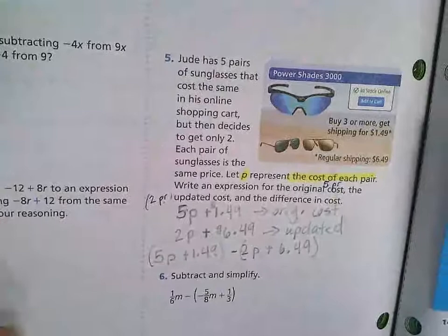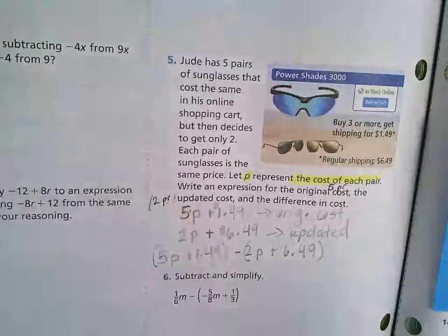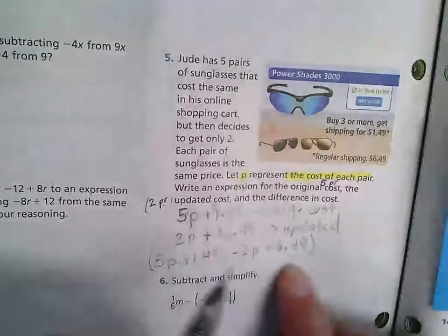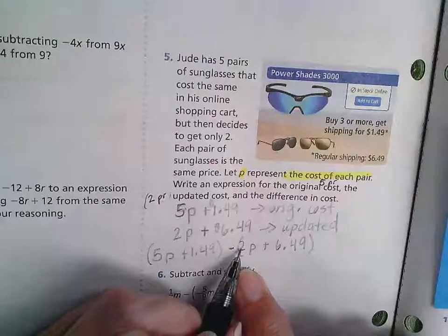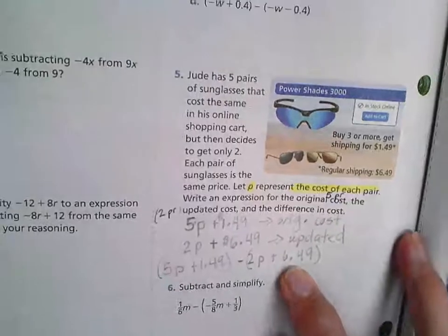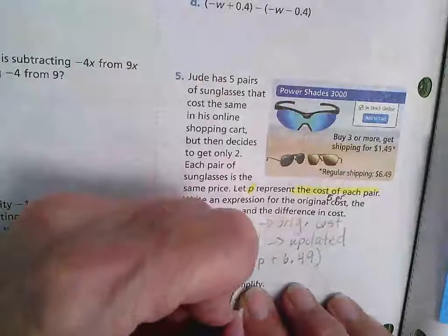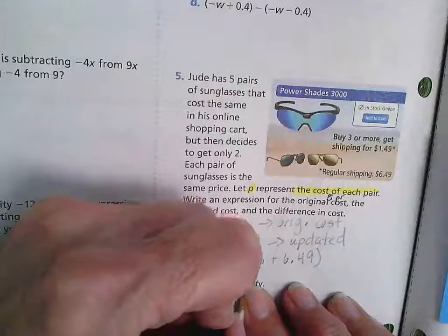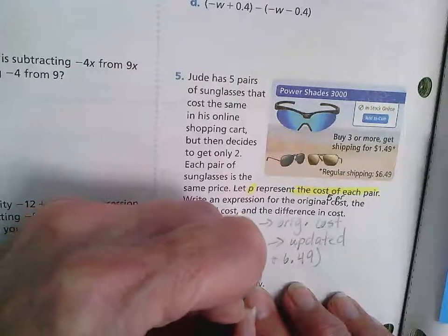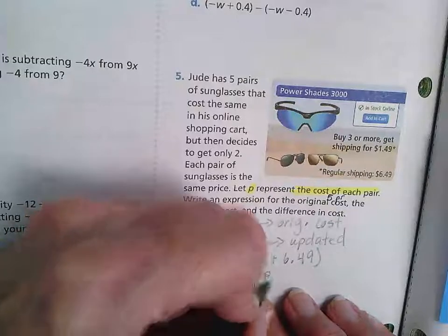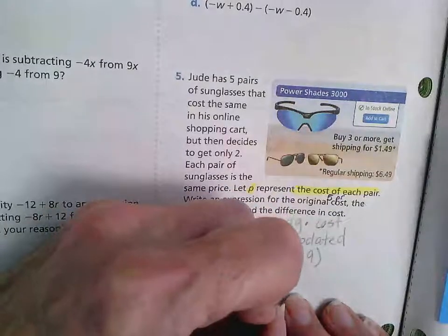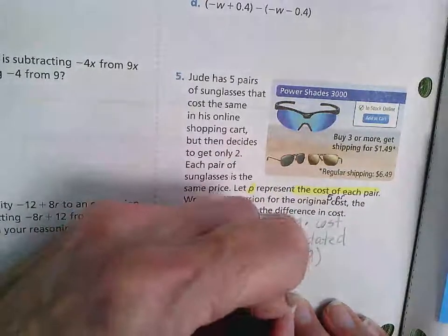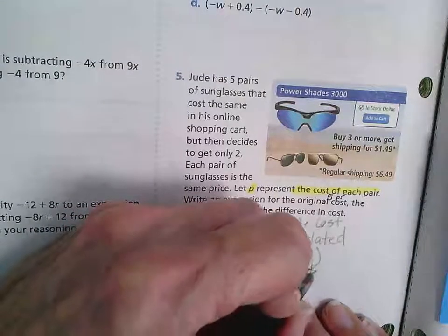So what we're going to do is this subtraction sign here is telling me that I need to change all of the signs inside the parentheses. So I'm going to have 5p plus $1.49 plus a negative 2p plus a negative $6.49.